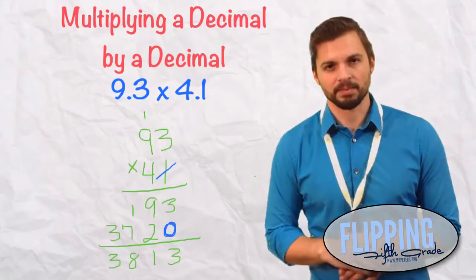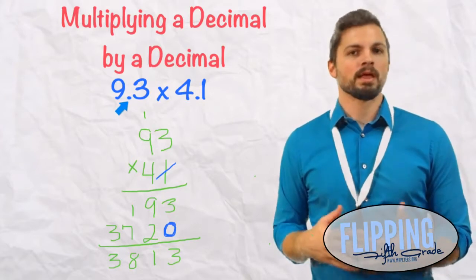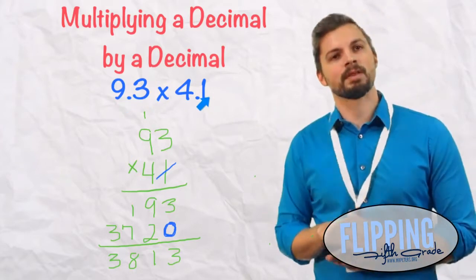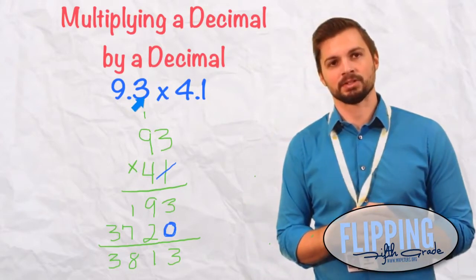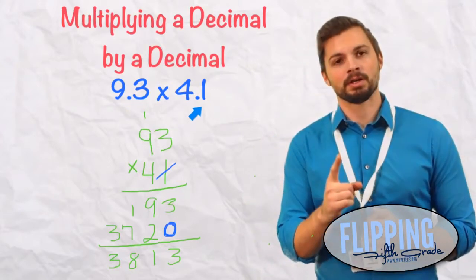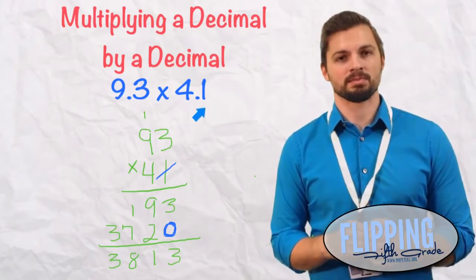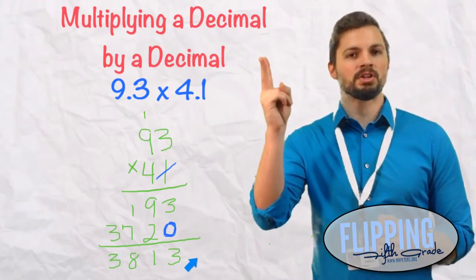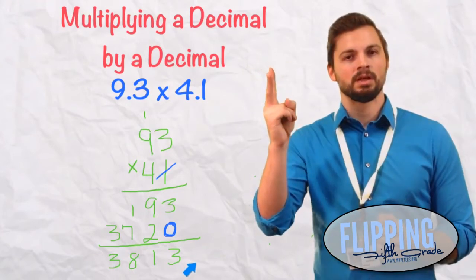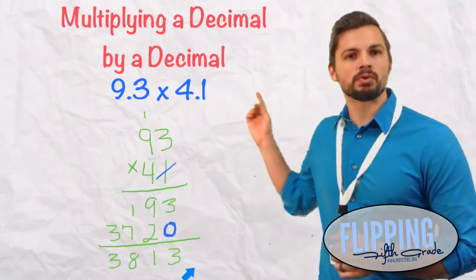Last step. We go back to the original problem, 9.3 and 4.1, and we look how many digits are behind the decimal. Look at the top number. There is one digit behind the decimal in that number, and on the bottom number, there is also one digit behind the decimal. So if there's one digit on the top number behind the decimal, one digit on the bottom number behind the decimal, that is a total of two digits behind the decimal.